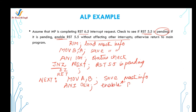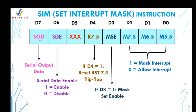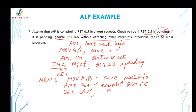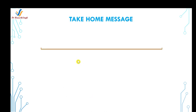To enable the mask set enable bit (d3) in the SIM instruction, perform an OR operation with 08h. This sets d3 to 1 without disturbing other bits. Then use the SIM instruction to apply the new mask settings, and finally jump to the service routine to complete the task. This completes the assembly program.